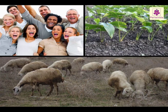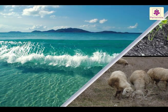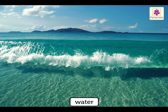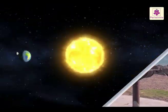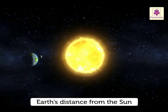The factors that make it possible for living things to survive on Earth are water, air and the Earth's distance from the Sun.